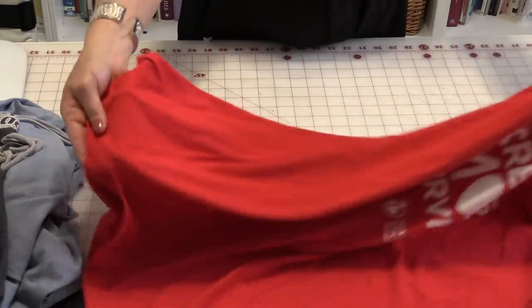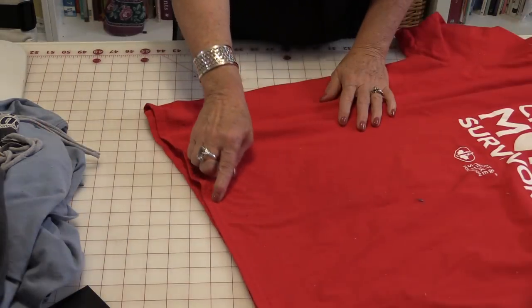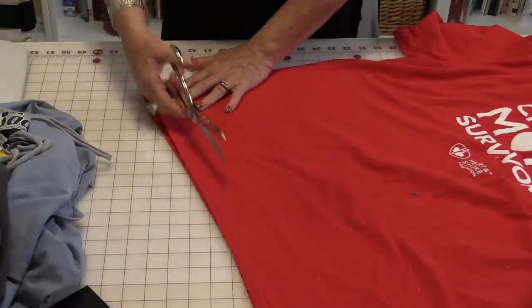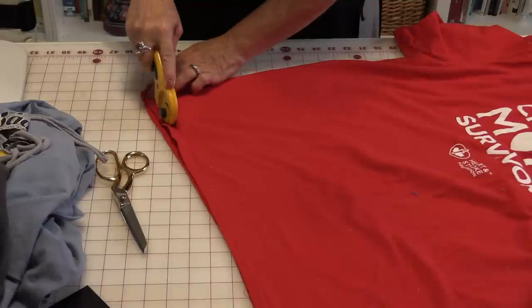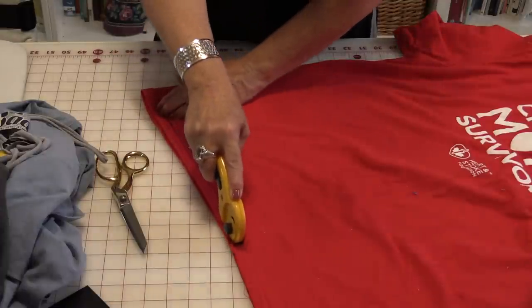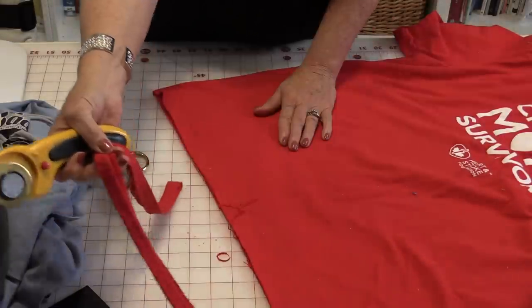To start, you're going to need a t-shirt and cut the hem off. You can use a pair of scissors and cut the hem off, or you can take a rotary cutter and just cut all the way along that edge, removing the hem.